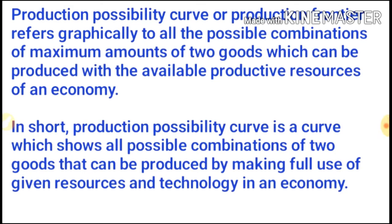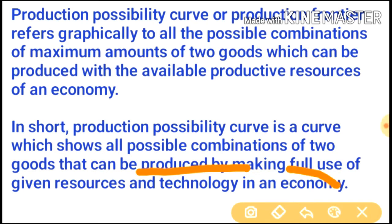Production Possibility Curve or Production Frontier refers graphically to all the possible combinations of maximum amounts of two goods which can be produced with the available productive resources of an economy. In short, the Production Possibility Curve is a curve which shows all possible combinations of two goods that can be produced by making full use of given resources and technology in an economy.